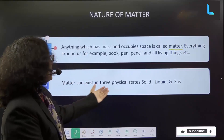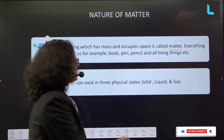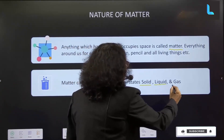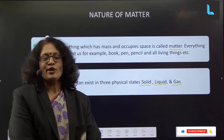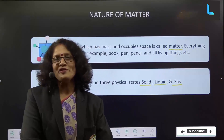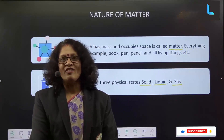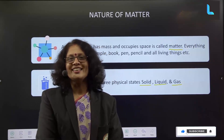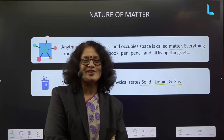Matter can exist in three states: solid, liquid, and gas. These are three physical states. There are actually five physical states now — already discovered — but in your course, we are studying three physical states. So right now, let us discuss the first three physical states.